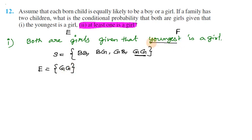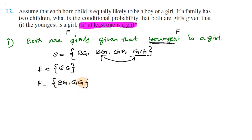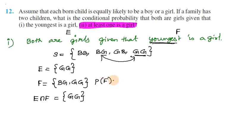The youngest is a girl. So the outcomes where the youngest is a girl are: boy-girl and girl-girl — two outcomes. This is the condition event F, and girl-girl is the common event — the intersection of E and F.